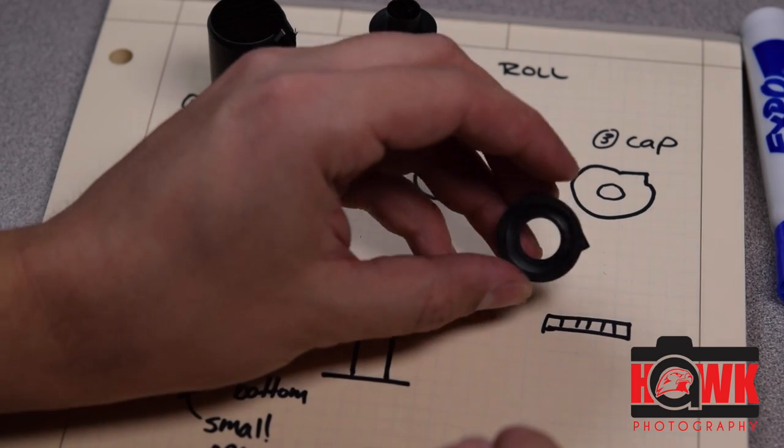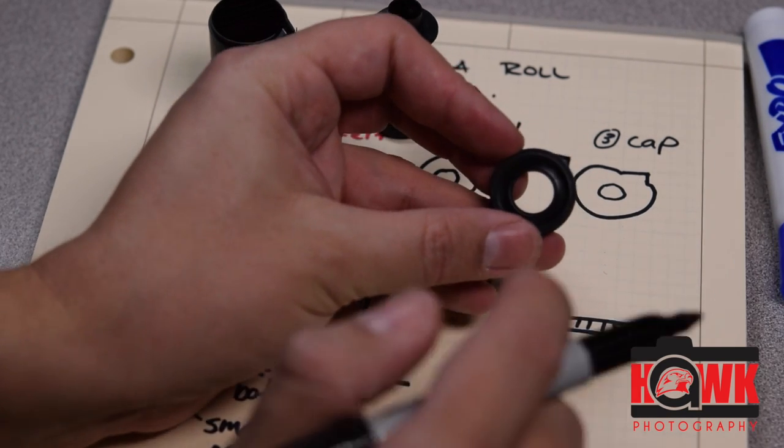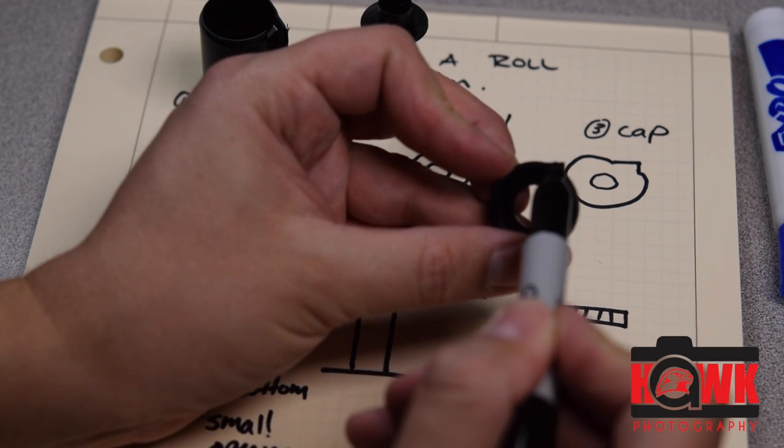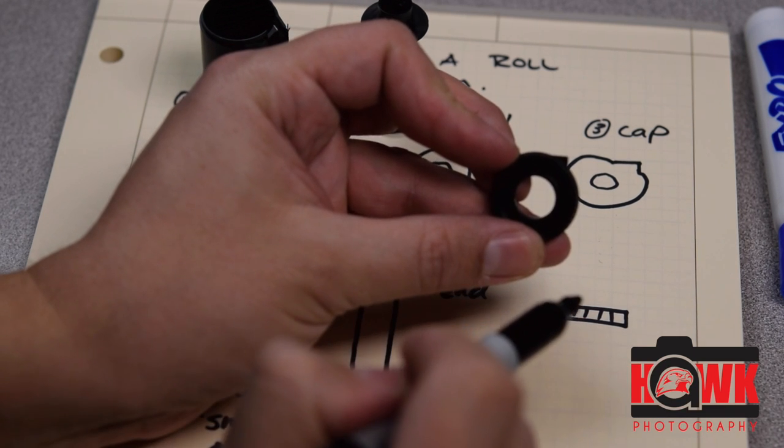The cap portion, pretty simple. It does have a little triangular protuberance right here. And that we'll talk about later.